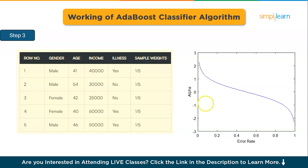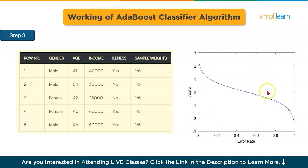According to this graph, when the misclassification error is 0 — meaning there is no error — the amount of say, alpha, will be a very large value. When the classifier predicts half correctly and half incorrectly, the total error is 0.5 and the classifier's amount of say equals 0. And if all the samples were improperly categorized, the error will be close to 1 and our alpha value will be a negative integer, such as minus 2.